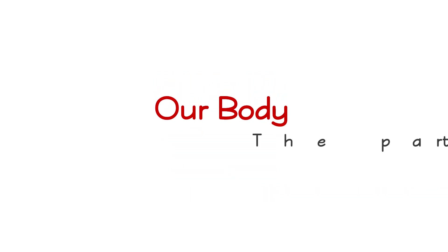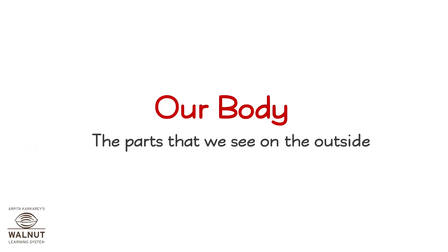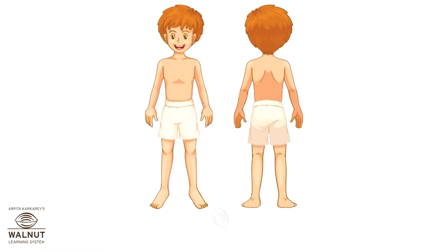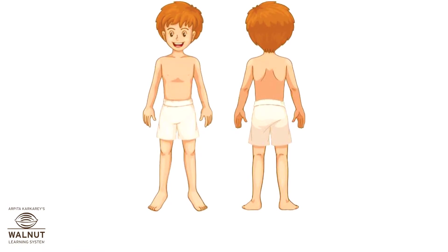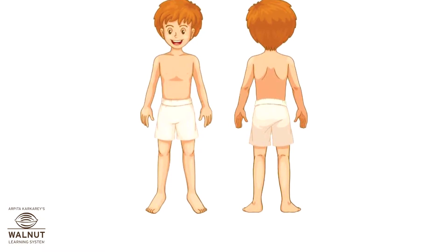Our body — the parts that we see on the outside. Our body has many parts. The main parts are the head, torso, arms and legs.